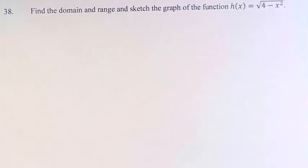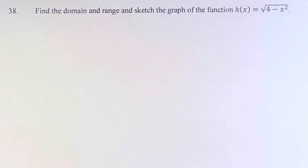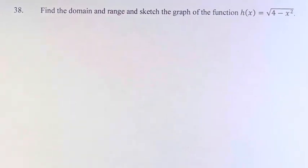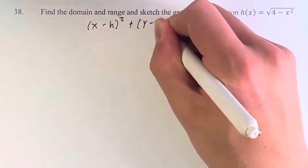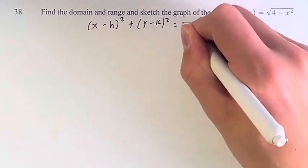What we're going to do is take a form of a function that looks completely different and connect it to h(x). If we take the equation of a circle, that's (x - h)² + (y - k)² = r².